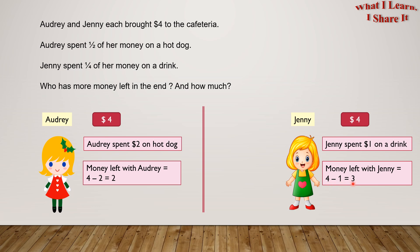So we can clearly see that in the end, Jenny has one more dollar than Audrey. Yay!